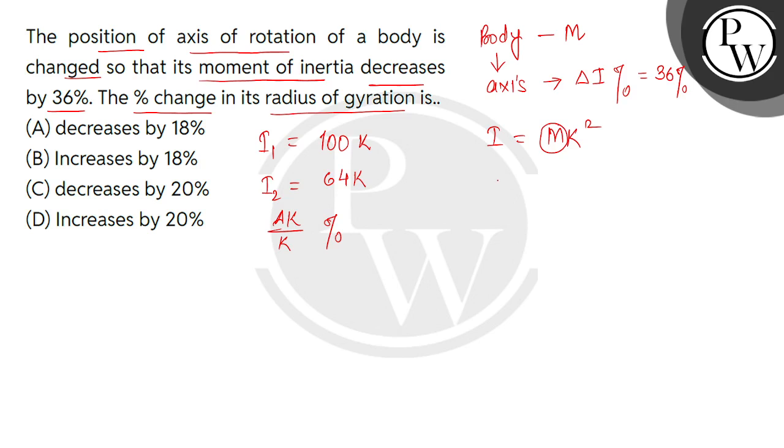Now if the mass is constant, k is directly proportional to I. It means k is directly proportional to square root of I. So we can write k2 divided by k1 equals square root of I2 divided by I1.